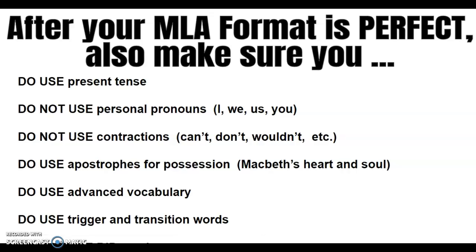Things to keep in mind after you make sure your MLA format is perfect: Use present tense — go back through and make sure you are using present tense in your writing. The play is always happening, so we're not using past tense. Do not use any personal pronouns: I, we, us, you. You can use Control F to check. If they're part of your direct quote, you can use them, but otherwise no. Don't use contractions — can't, don't, wouldn't — spell these words out, unless they are in your quotation. Do use apostrophes for possession. Do use advanced vocabulary and try to change some of your words up. Do use trigger words and transition words, and do not use RIP words.